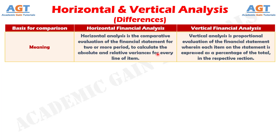Difference number 1. Horizontal analysis refers to the process of comparing the line items over the period in the comparative financial statement to track the overall trend and performance. On the other hand, vertical analysis refers to the tool used to study financial statements by making a comparison of each line item as a proportion of the base figure within the statement — that is, assets, liabilities, sales, or equity.